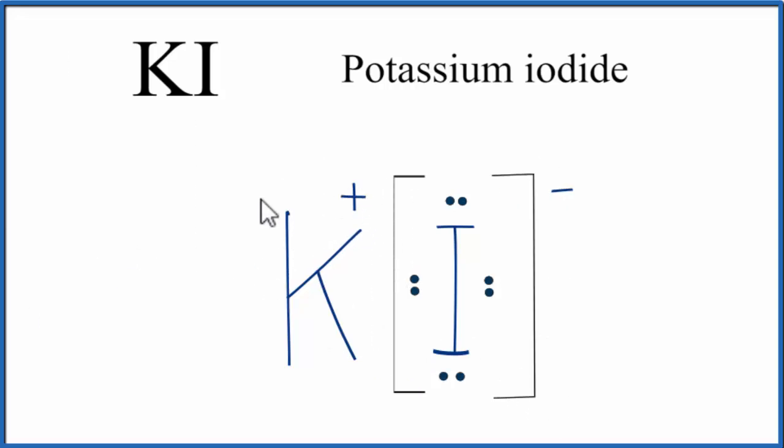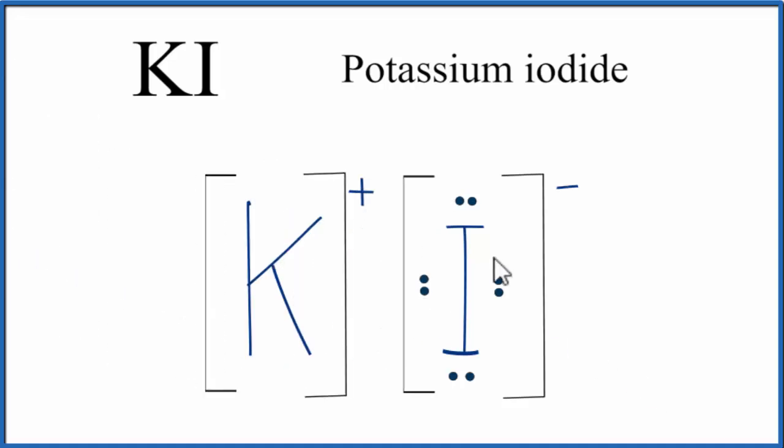You also see brackets on the positive ion as well sometimes. And that makes this the Lewis structure for KI, potassium iodide.